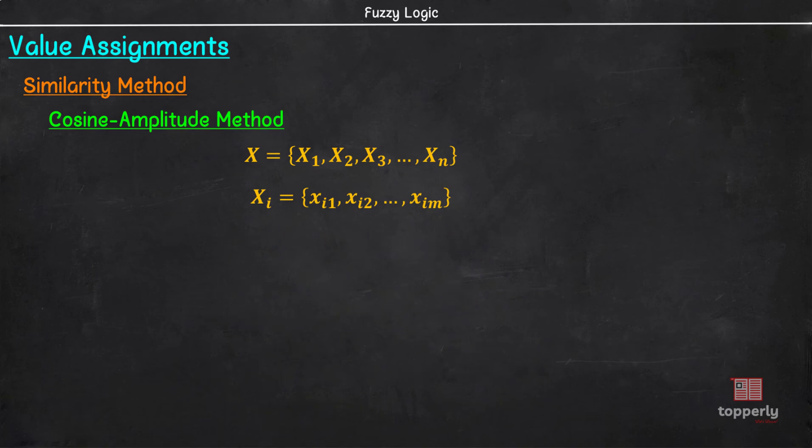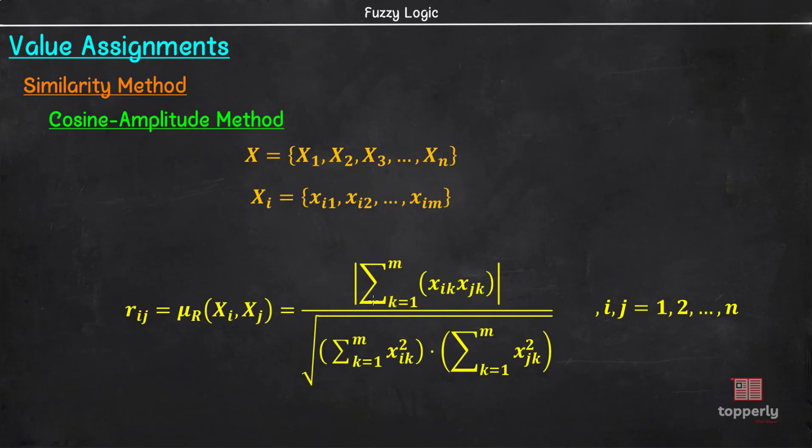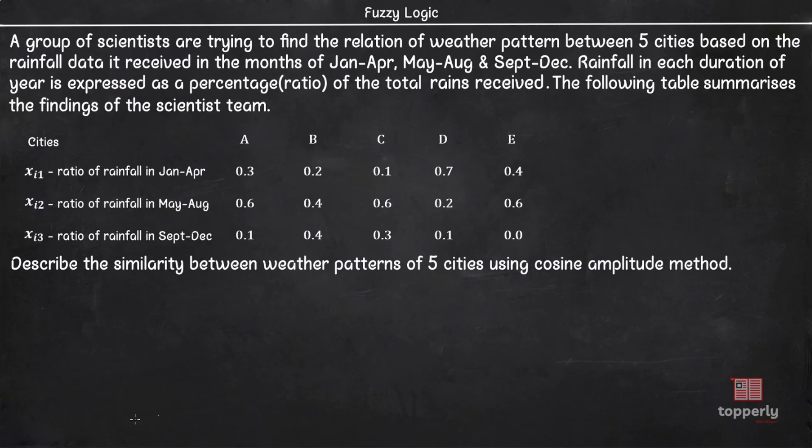Now, cosine amplitude method gives a similarity or relation matrix where the relation between two data samples Xi and Xj is given by the membership value Rij equals sigma k equals 1 to m (xik times xjk) divided by square root of sigma k equals 1 to m xik square times sigma k equals 1 to m xjk square, where i, j equals 1, 2, 3, etc. to n. To understand this better, let us take an example.